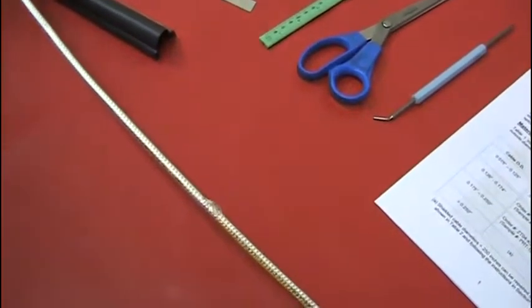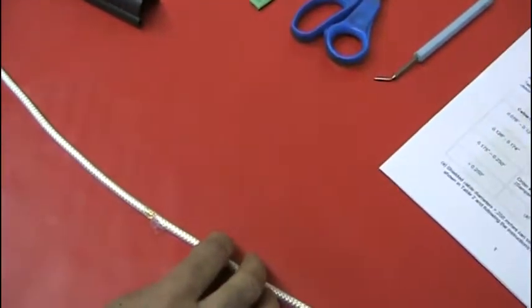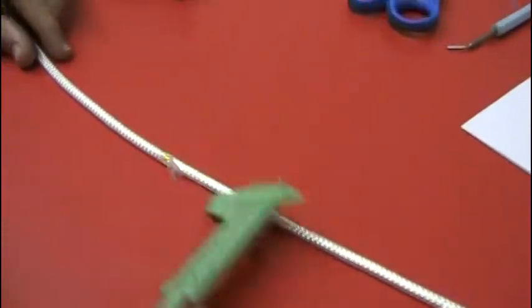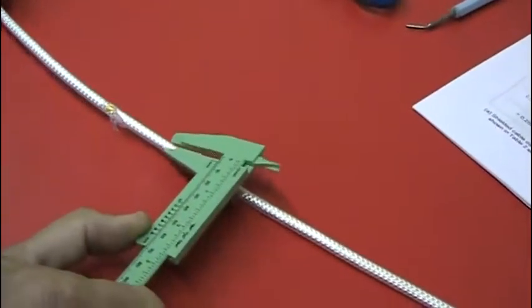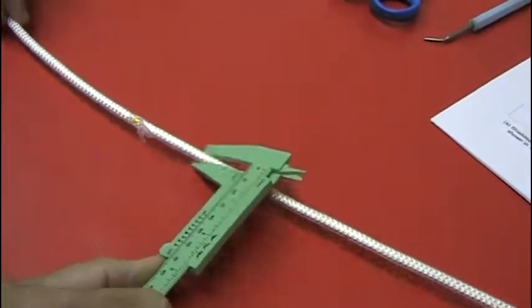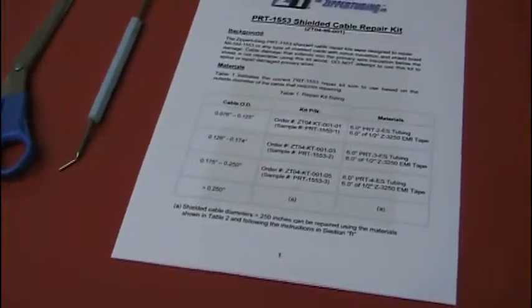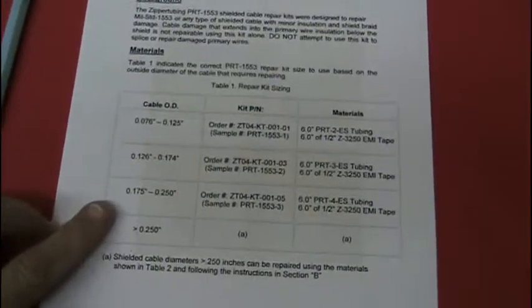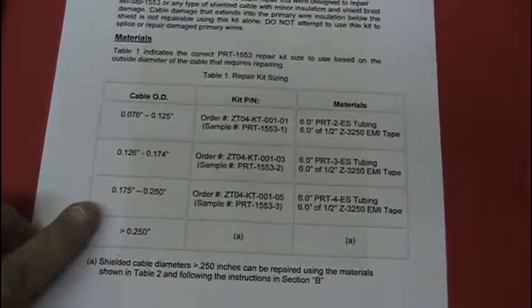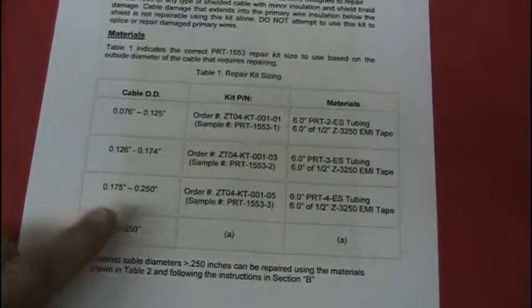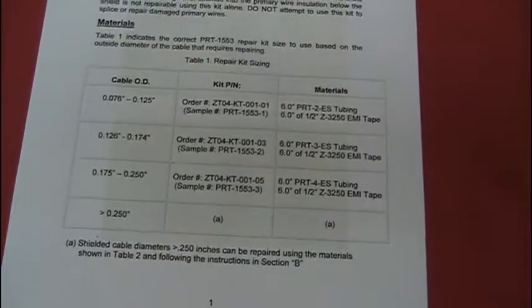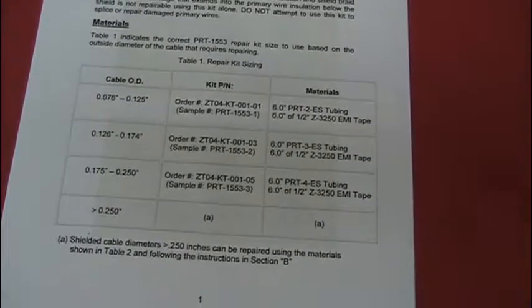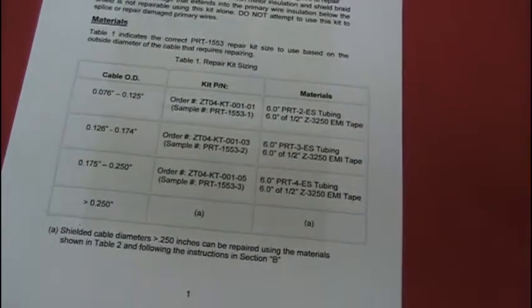To make this repair, the first thing you want to do is determine what the cable size is. In this case, I've already measured it. It's right at a quarter of an inch. So I go to the installation instructions and find that there is a kit for up to a quarter inch. And I have obtained a sample kit, which is what I have here. It's known as the DASH-3.